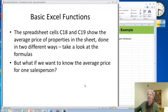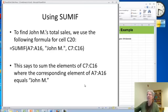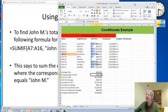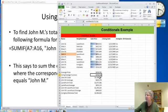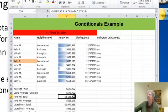But what if we want to know the average for one salesperson? So let's consider John M, and we're going to look at cell C20 here. Now if you look at the formula, it's a SUMIF. It has three arguments. The first one is the part of the spreadsheet that we're going to use as our condition, and in this case it's column A from 7 to 16.